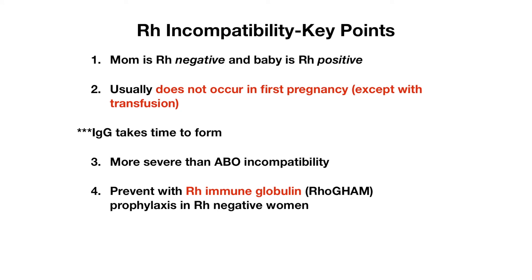Some key points for RH incompatibility: mom is RH negative and baby is RH positive, and it usually does not occur in the first pregnancy. This is because when mom is first exposed to a foreign antigen, she initially produces IgM antibodies, which do not cross placental tissue. IgG antibodies can cross placental tissue, but they take some time to form, so this reaction usually does not occur in the first pregnancy. Exceptions include if mom has had a prior transfusion, as she has had a longer time to produce those antibodies.